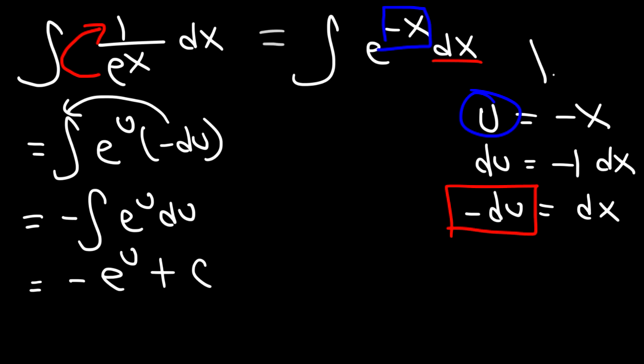And then the last thing we need to do is replace u with negative x. So the final answer is negative e to the negative x plus c.